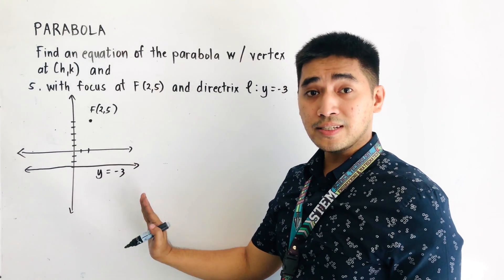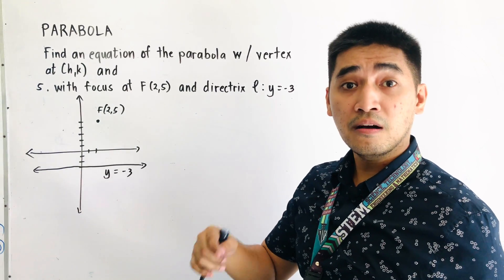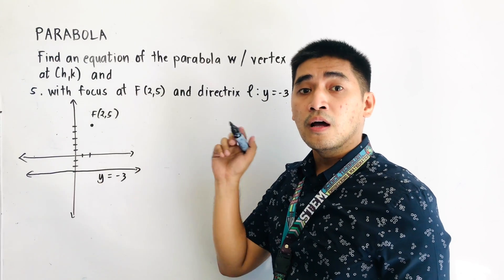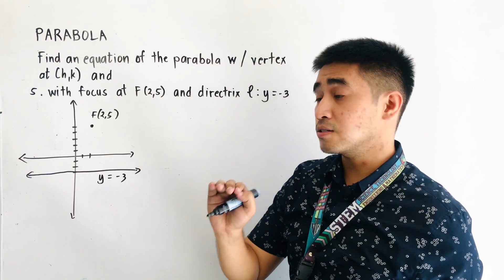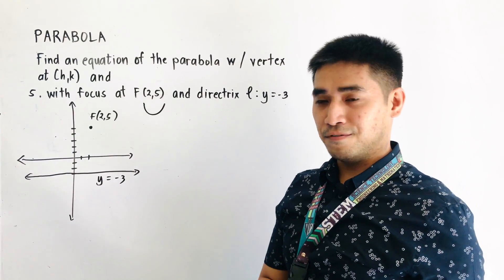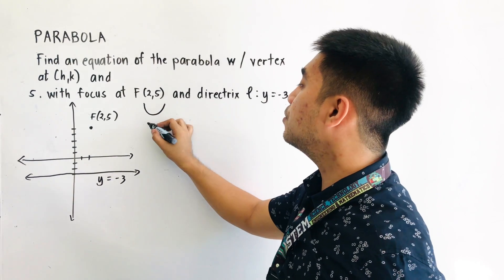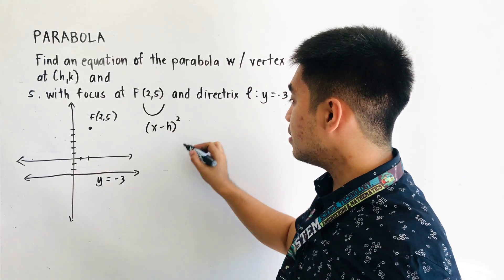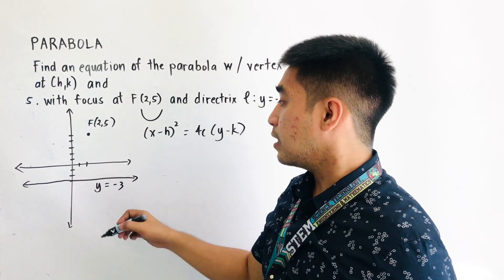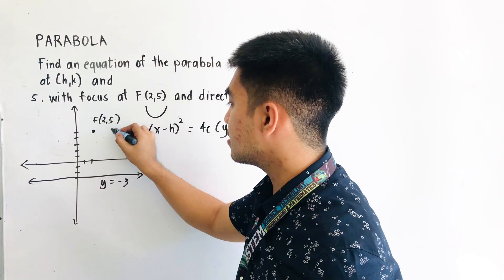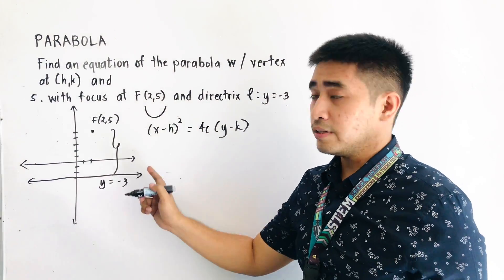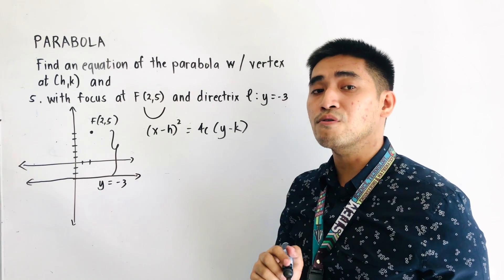From this graph, we could say that our parabola is opening upward or downward. We are given that the focus is located above the directrix. Remember that when a focus is located above the vertex or the directrix, our parabola is opening upward, and the right side of the equation should be positive. So if our parabola is opening upward or downward, we will use the formula: (x minus h) quantity squared equals 4c times (y minus k). In this case, we do not know yet the vertex. The vertex is located in the middle of the directrix and the focus.